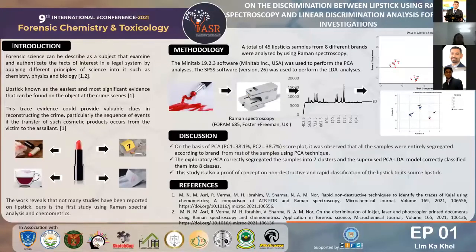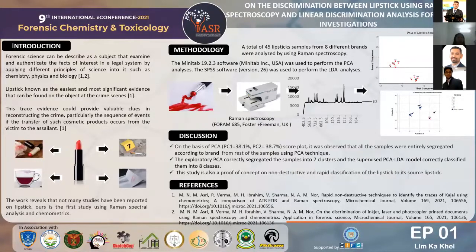As we know, lipstick is one of the most common items that can be found at a crime scene. This lipstick can be deposited onto any substrate, such as glass, tissue, and also cigarette butts. This trace evidence could provide valuable clues in reconstructing the crime.